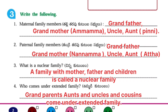What is a nuclear family? Answer: The family with mother, father and children is called a nuclear family. Fourth one: Who comes under extended family? Grandparents, aunts, uncles and cousins come under extended family.